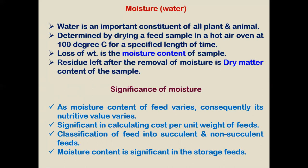Moisture meters are widely used in practice in feed plants, and suppliers also use them before buying any grains to ensure the moisture content of the feed, because moisture also affects the keeping quality. Higher moisture increases the chance of fungal infestation in the feed. So suppliers and buyers are taking care of this and have moisture meters.